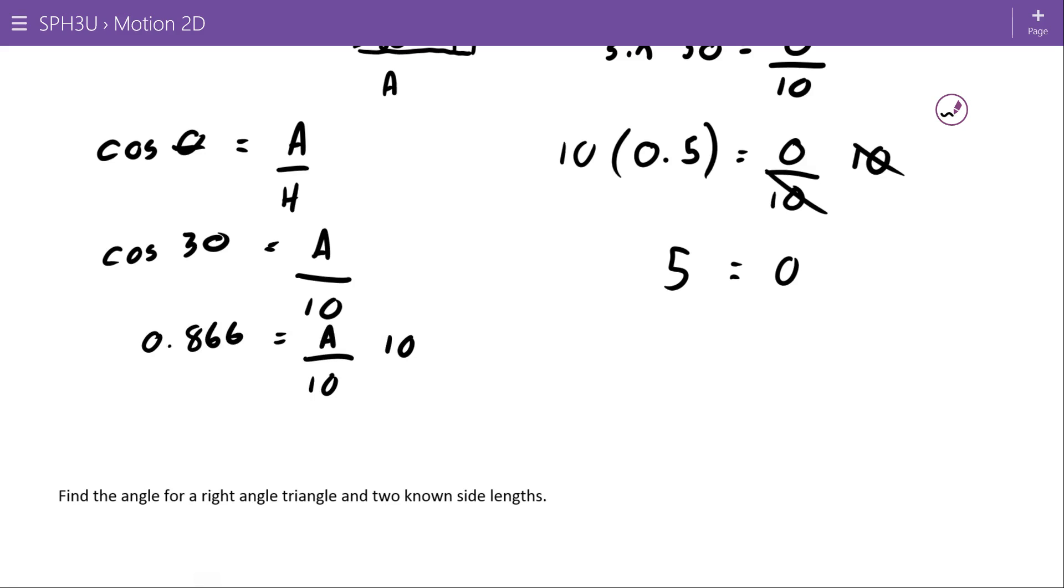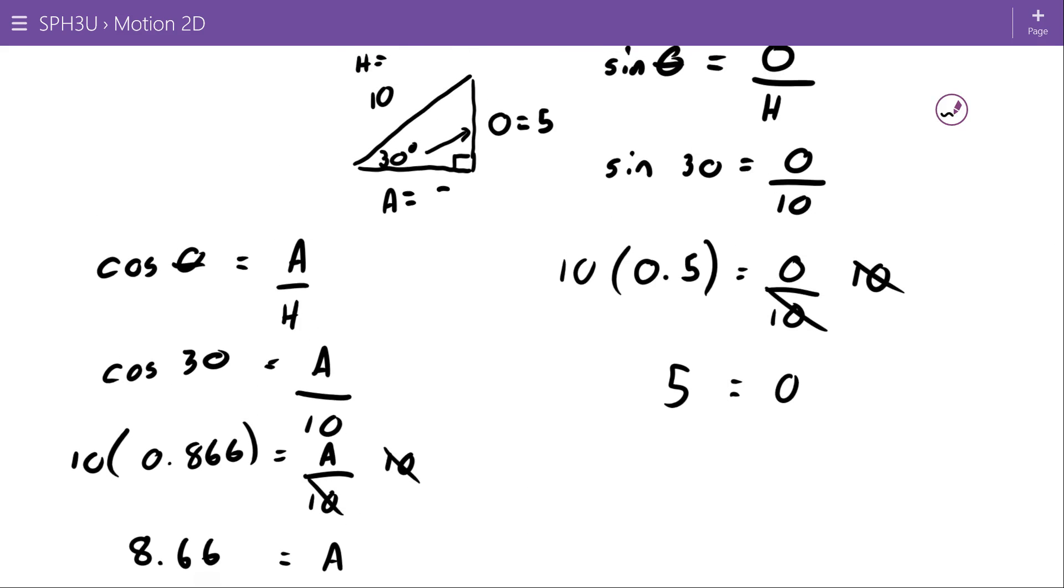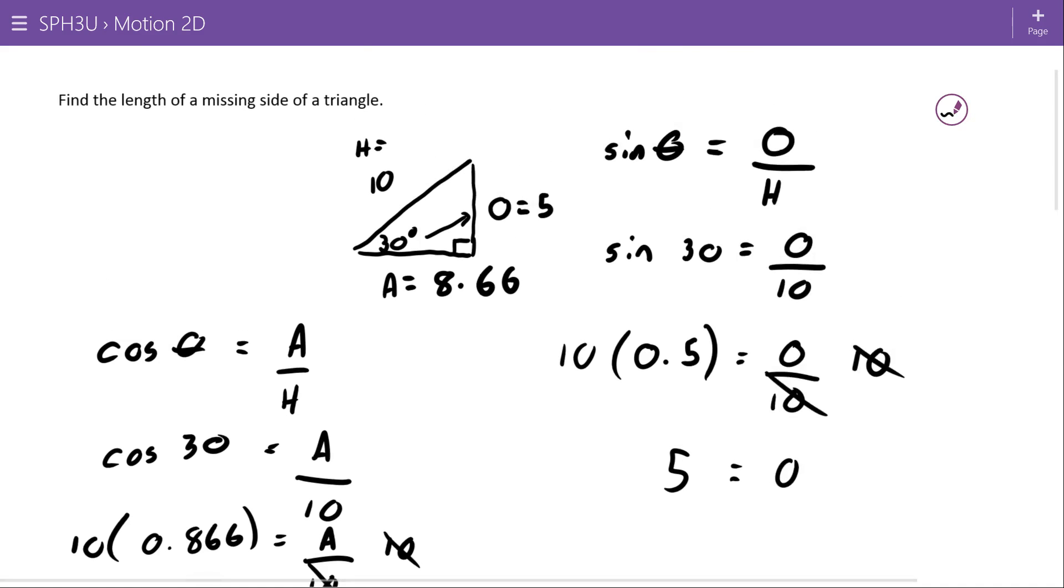So if I multiply both sides by 10, then we can see that my adjacent is 8.66. So that would go here. So as long as we know at least one side and one angle, we can find the other two sides of a triangle.